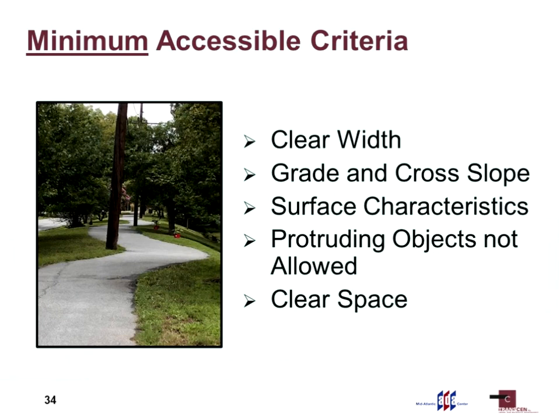We're going to talk about the minimum accessible criteria for pedestrian access routes: clear width, grade and cross slope, surface characteristics, protruding objects, and clear spaces. These are all very simple concepts — they're just really hard to apply.